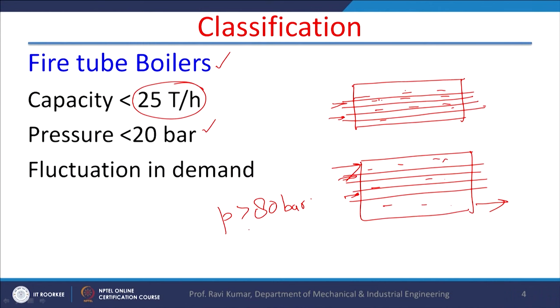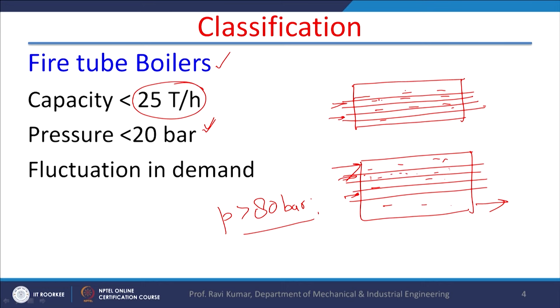High pressure boilers are those where pressure is greater than 80 bar, and between 20 to 80 bar they are intermediate pressure boilers. Fire tube boilers are normally low pressure boilers because when the shell is filled with steam at high pressure, a robust design of the shell has to be made — it is not very cost effective, the boiler also becomes heavy, and there are safety-related issues. So normally high pressure boilers are made as water tube boilers, because the high pressure of fluid will be inside the tubes only, and the shell will be filled with flue gases which are at atmospheric pressure.